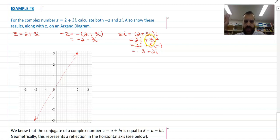And then we get this 3i times i, which means we get 3i squared, which is 3 times negative 1.